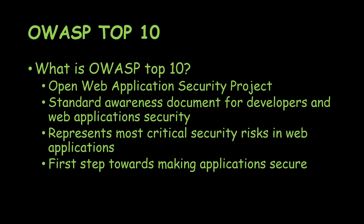The current version is 2021, which was released last year, and previously there was a 2017 version. It is a standard awareness document which can be used by developers for securing their applications based on this list, and also for web application security experts who can test applications for these risks. It represents the most critical security risks present in web applications, and the data comes from surveys or from security experts.